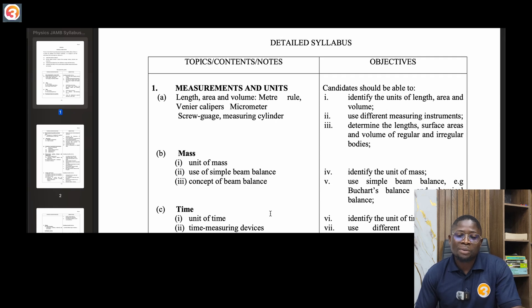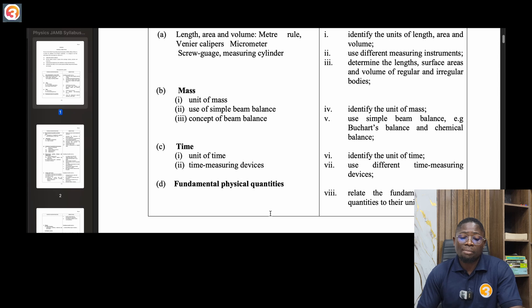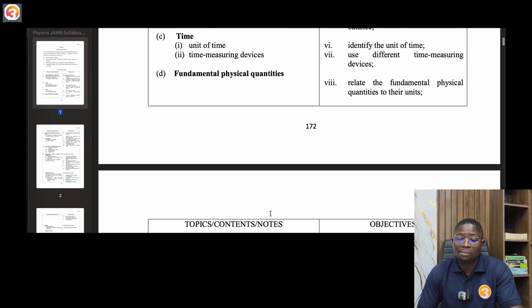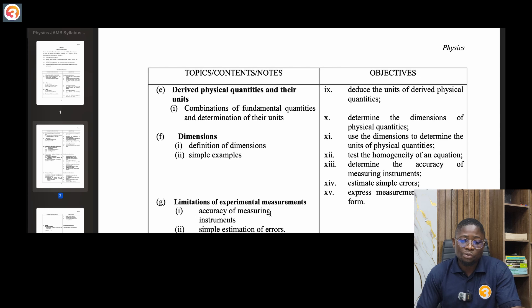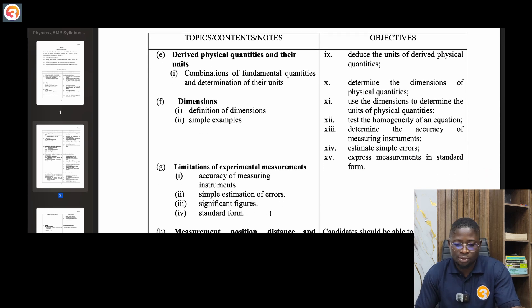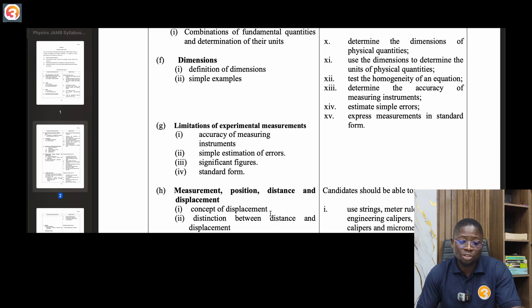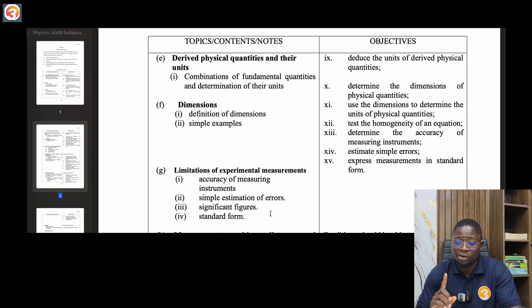So let us see the detailed syllabus. Number one, Measurements and units. That's the first topic in physics. You have to know length, area and volume with vernier caliper, micrometer, screw gauge, measuring cylinder. Talk about mass, time, fundamental physical quantities, derived physical quantities and their units, dimensions.